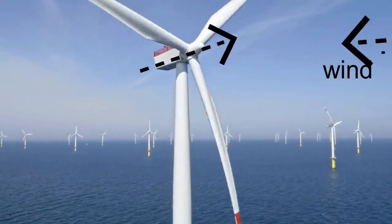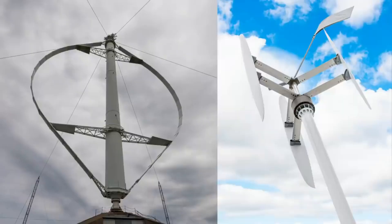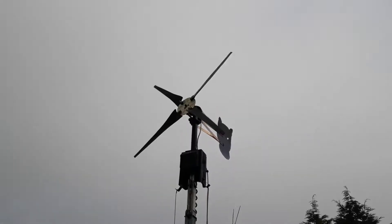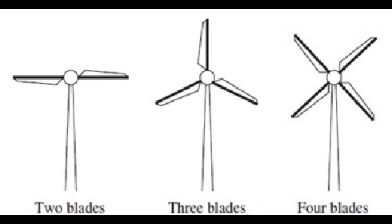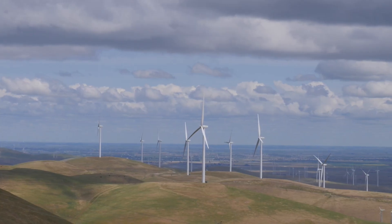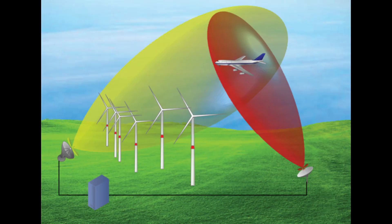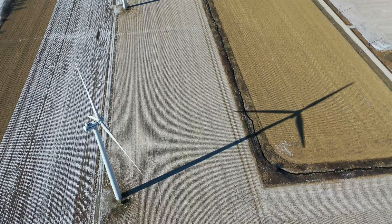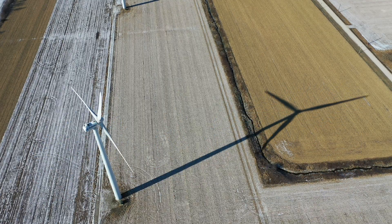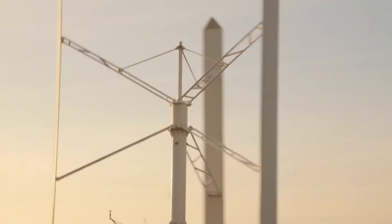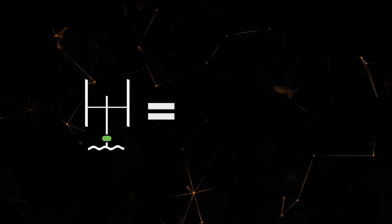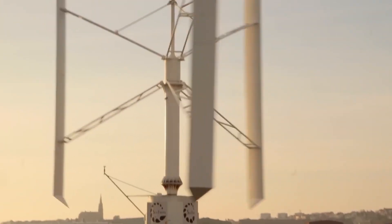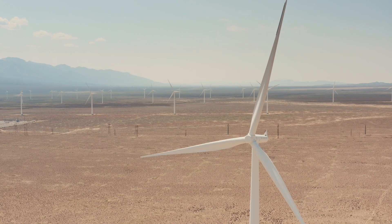Wind turbine blades are the key components of wind turbines that capture the wind energy and convert it into mechanical power. They can have different types depending on their shape, size, number, and orientation. Each type of wind turbine blade has its own advantages and disadvantages, and is suitable for different wind speeds and torque applications. The most common types are horizontal axis and vertical axis, but there are also some other types that are less common or experimental. Wind turbine blades are designed to optimize the efficiency and performance of the wind turbine, while increasing its life expectancy and safety.